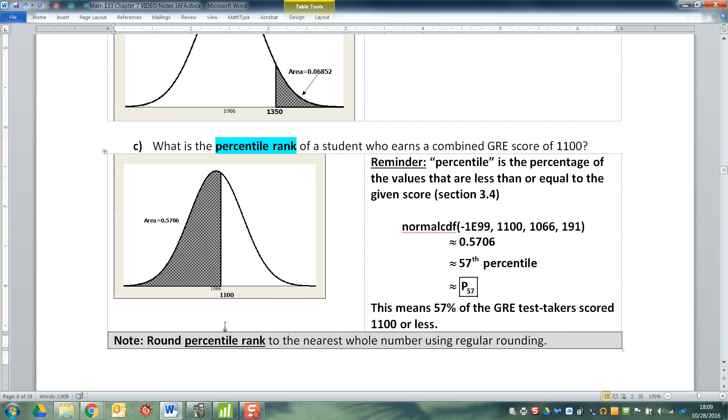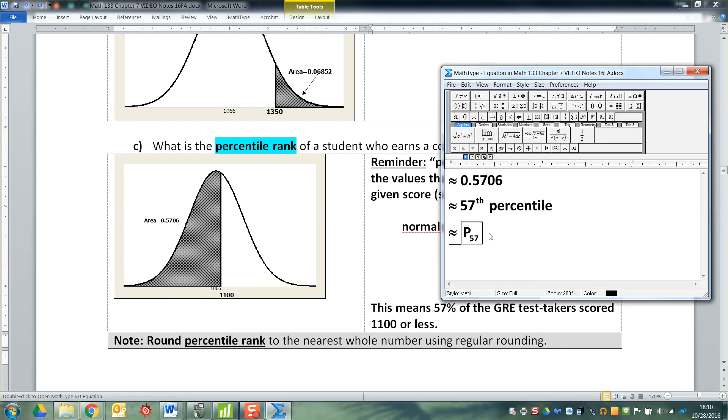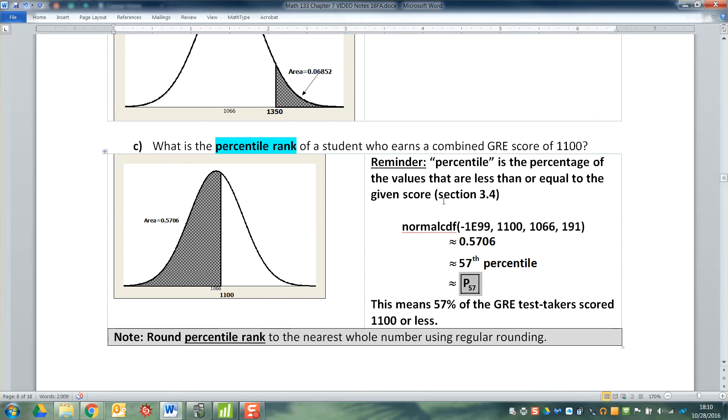In other words, 43% scored higher than a student that scores 1100 and 57% are either at that 1100 score or less. But your actual answer is right here. It's the P.57 part right there. That's your actual answer. And there we have it.